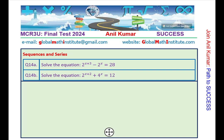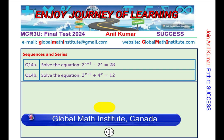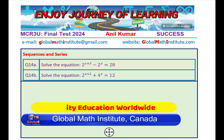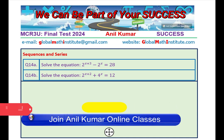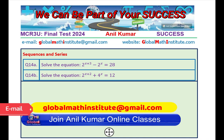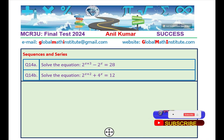Here is question number 14, which is solve the exponential equations. Two of them are given to you. They look similar. 2^(x+3) - 2^x = 28, and then we have 2^(x+2) + 4^x = 12. Try to solve these equations. We will move on to the 15th question now, which is application of trigonometry.